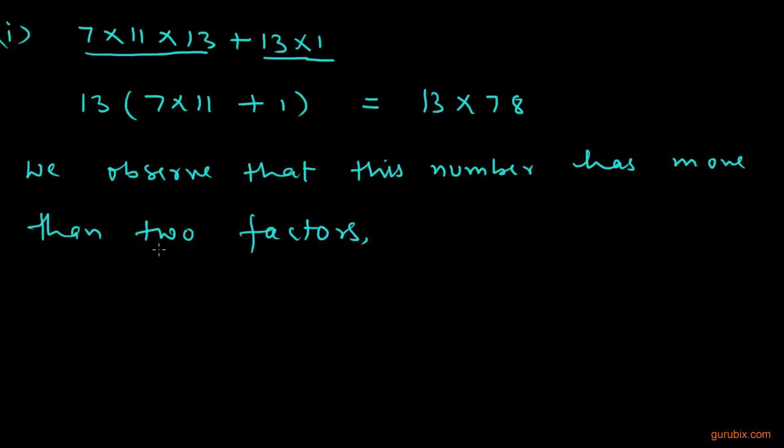Therefore, the number of factors are more than 3. So, 7×11×13 + 13 is a composite number.